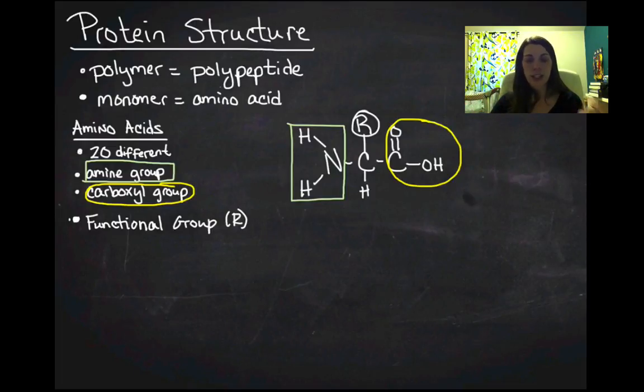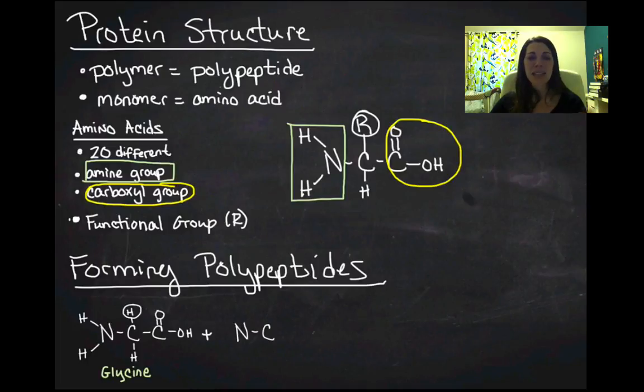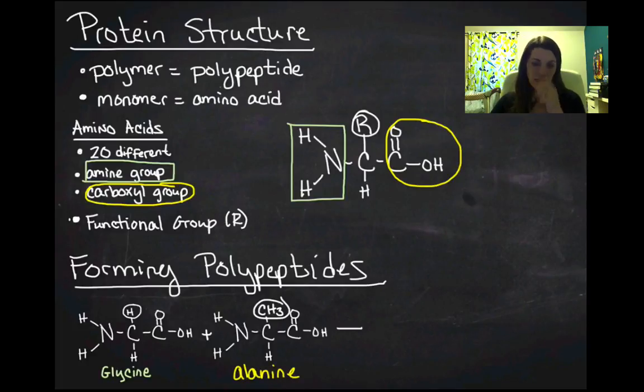So, let's look at an example of actually taking two amino acids and putting them together. So, I'm going to form a polypeptide. I'm going to do this by taking two monomers, putting them together, removing a water dehydration synthesis. So, I'm going to take my amino acid. And this one, if you notice, my functional group is just an H. So, that's glycine. And I'm going to add to that this amino acid. And here I have a CH3. And that is an alanine. So, I'm going to take my glycine and my alanine. I'm going to remove a water.